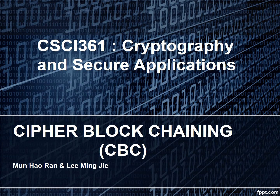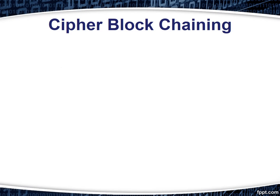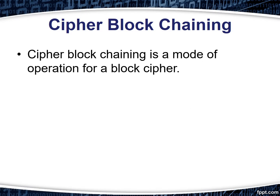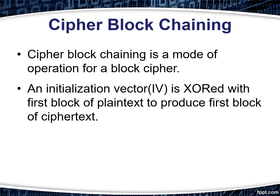Today we are going to talk about what is cipher block chaining. Cipher block chaining uses what is known as an initialization vector of a certain length. An initialization vector is XOR'd with the first block of plain text to produce the first block of cipher text.